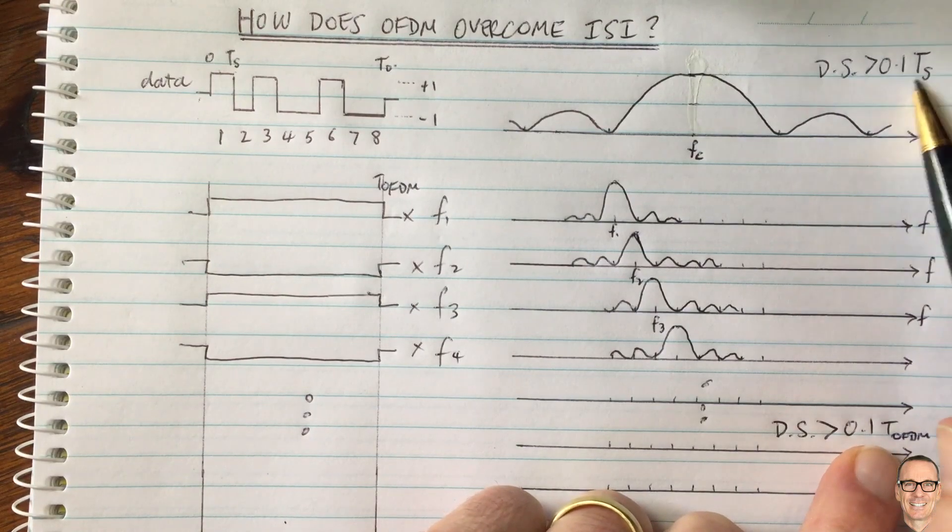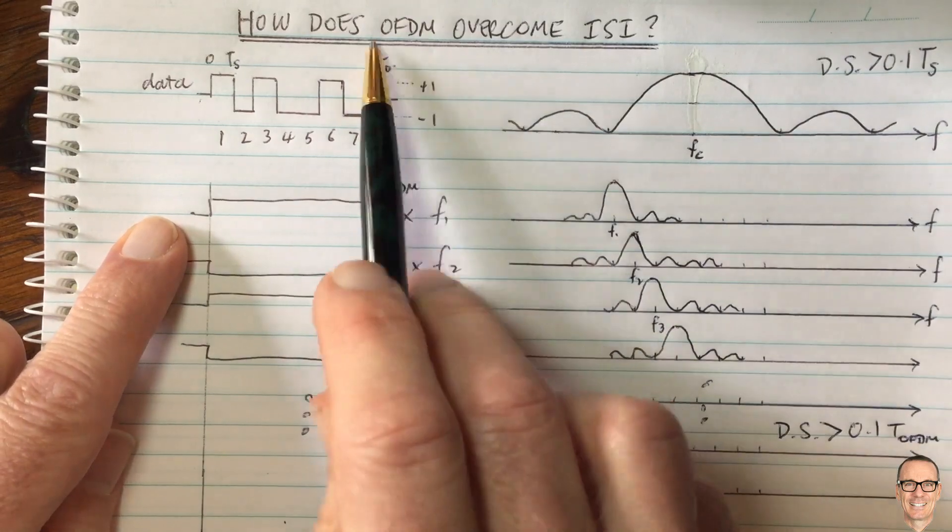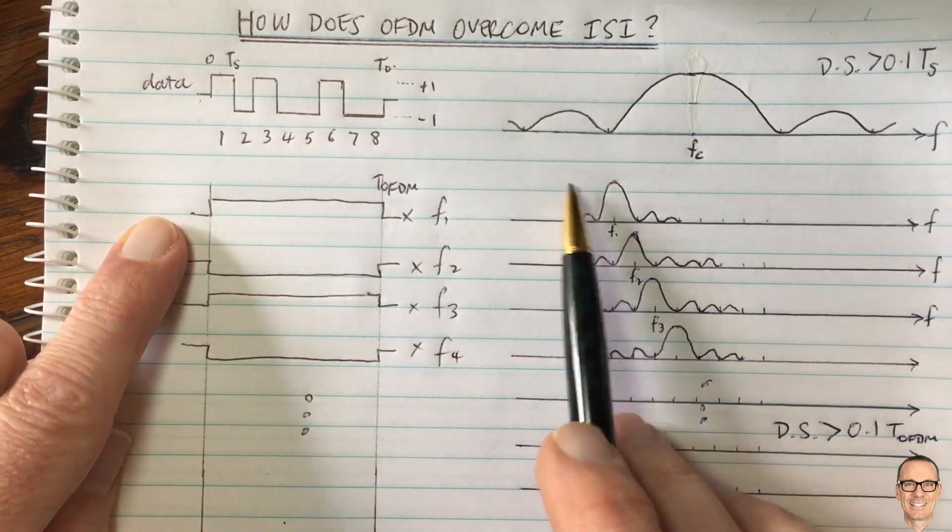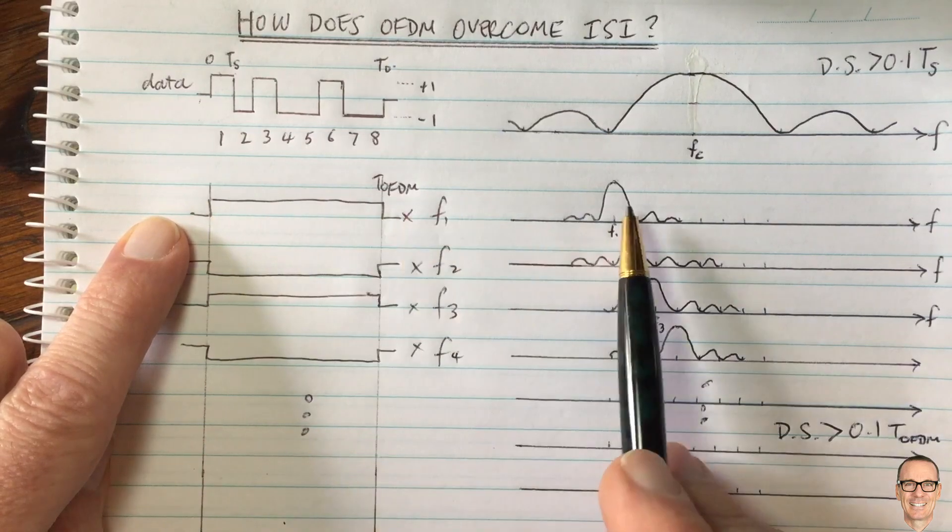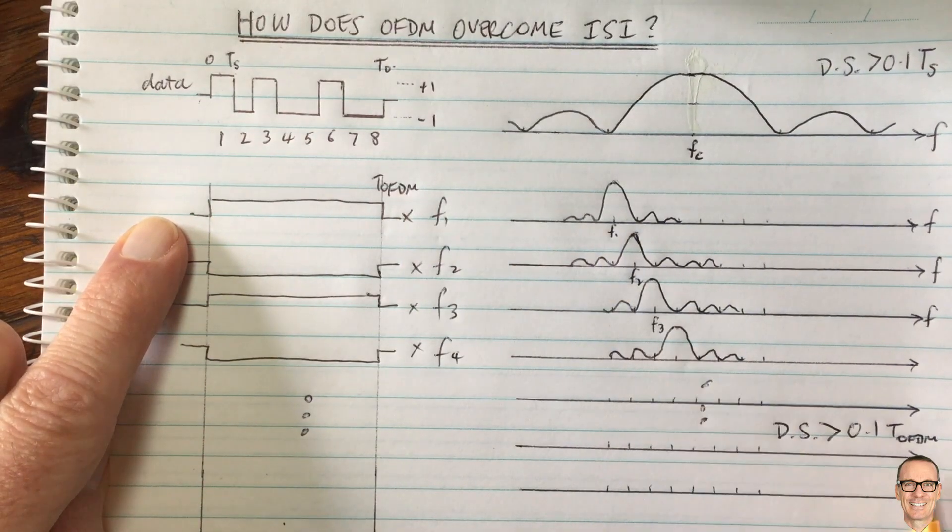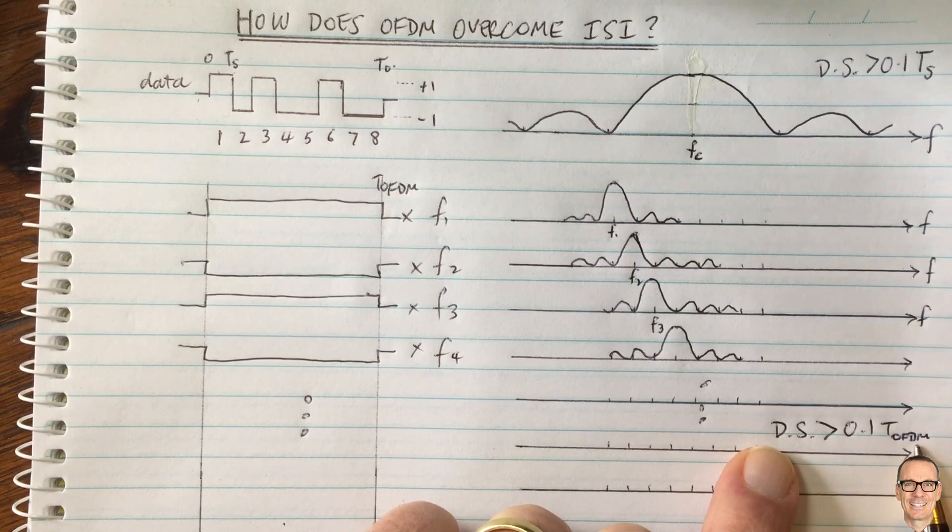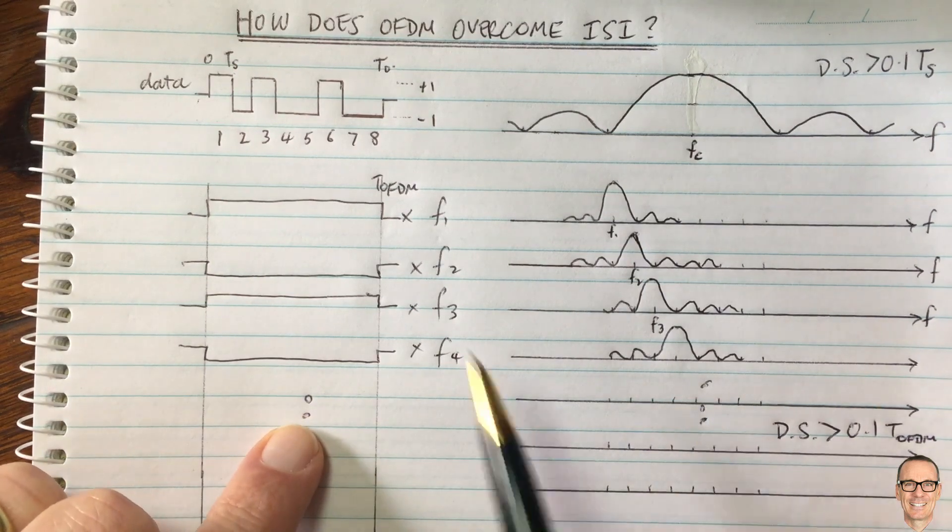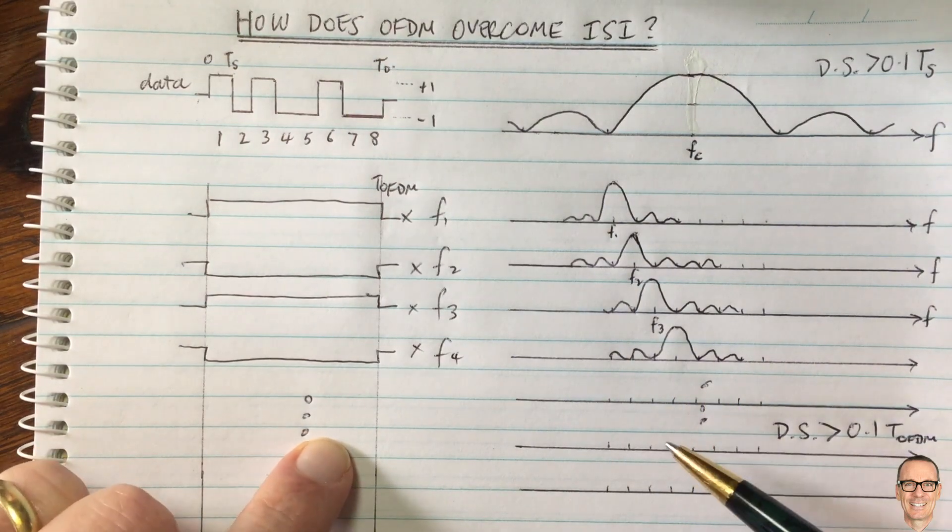And TOFDM is much bigger than TS. So by sending with an OFDM format, you have much longer symbols for each of the narrow band orthogonal sub-carriers. And it means that the delay spread needs to be much bigger before you start getting significant inter-symbol interference that you need to worry about. So this is a clear case where OFDM gives you a very big advantage in terms of equalization.